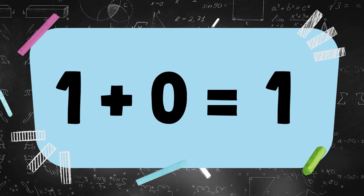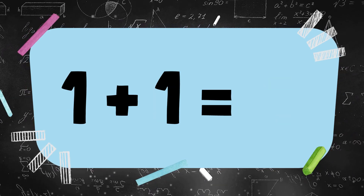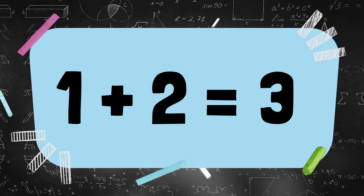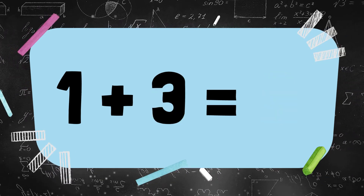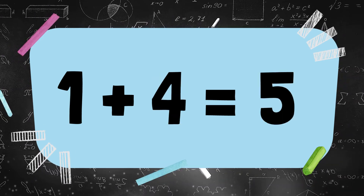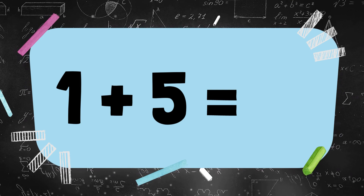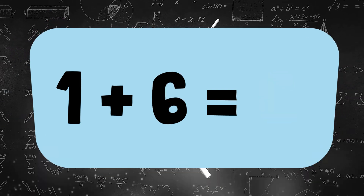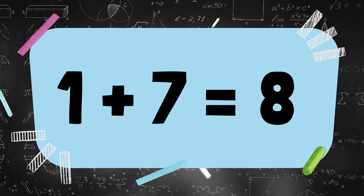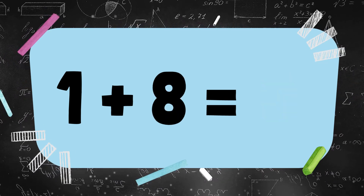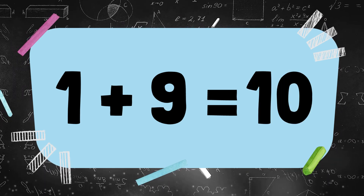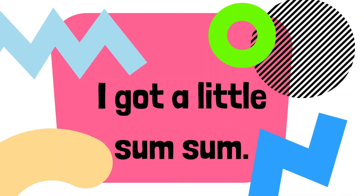1 plus 0 is 1, 1 plus 1 is 2, 1 plus 2 is 3, 1 plus 3 is 4, 1 plus 4 is 5, 1 plus 5 is 6, 1 plus 6 is 7, 1 plus 7 is 8, 1 plus 8 is 9, 1 plus 9 is 10. I got a little sum sum.